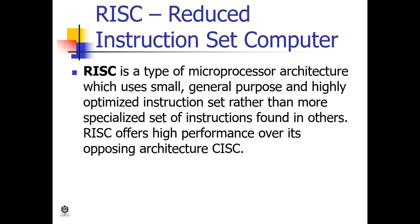RISC is a type of microprocessor architecture which uses a small, general-purpose, and highly optimized instruction set rather than the more specialized set of instructions found in others. RISC offers high performance over its opposing architecture, CISC. In a processor, execution of each instruction requires a special circuit to load and process data, so by reducing instructions the processor uses simpler circuits and is faster in operation.